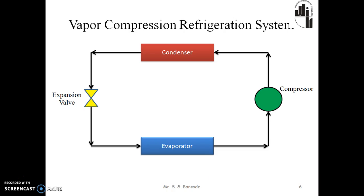Let's have a look at how the vapor compression refrigeration system works. When the compressor is started, it draws the low-pressure vapor from the evaporator — it may be wet vapor, dry saturated refrigerant, or superheated vapor — and compresses it isentropically to a sufficiently high pressure. Since the compression work is done on the vapor, its temperature also increases. The hot vapor from the compressor under pressure is discharged into the condenser, where it is cooled at constant pressure by rejecting heat to the condenser cooling medium, usually water or surrounding air. This converts the hot vapor into saturated liquid.